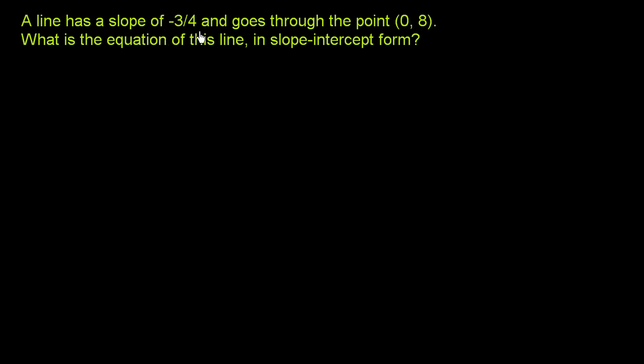A line has a slope of negative 3 fourths and goes to the point 0 comma 8. What is the equation of this line in slope-intercept form?